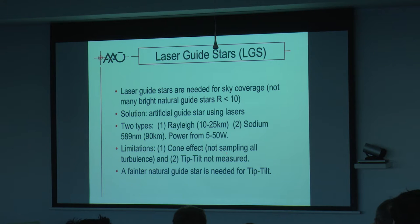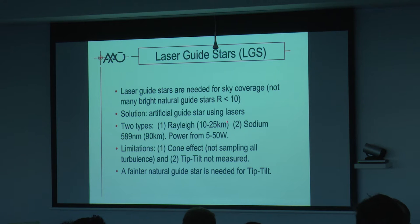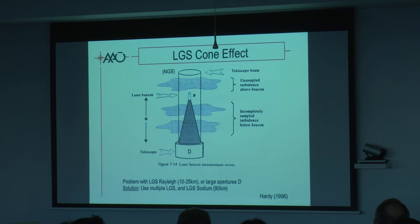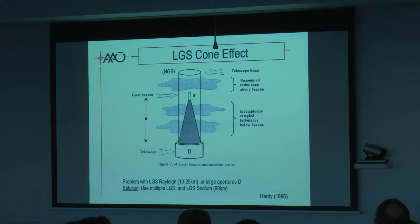The limitation of laser guide stars is the cone effect — it's a point source at 90 km, so we don't sample all the turbulence. We also can't measure tip-tilt because the upward and downward paths go through the same bit of atmosphere, so we can't measure image motion. A natural guide star is also needed for tip-tilt — you can't use a laser guide star by itself. The tip-tilt star can be much fainter because we use the whole aperture rather than sub-apertures of the wavefront sensor, so you can go to magnitude 15 or 17. Rayleigh laser guide stars don't sample turbulence above their altitude, and with larger apertures more turbulence goes unsampled; the solution is multiple laser guide stars or a higher-altitude guide star.